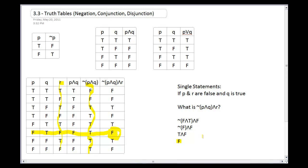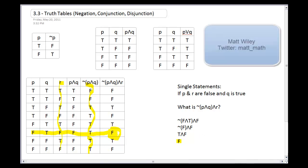So that's truth tables — negation, conjunction, and disjunction. Go onto Blackboard, look at the textbook examples for this section, and work through them with pencil and paper until you understand. Send emails if you have questions, and then you're ready to go onto Math Excel and work on the homework.